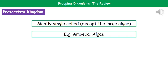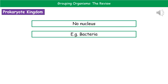The next kingdom is the protoctista. These are mostly single-celled organisms, with the exception of the large algae. Examples include amoeba and algae. The final kingdom is the prokaryotes. Their key characteristic is that they have no nucleus, and the main example is bacteria.